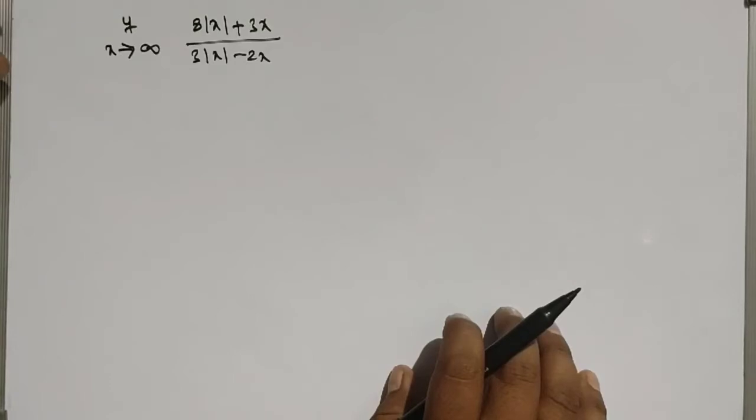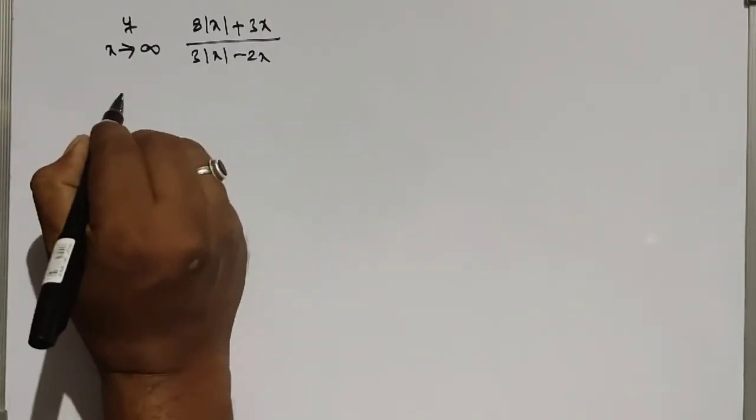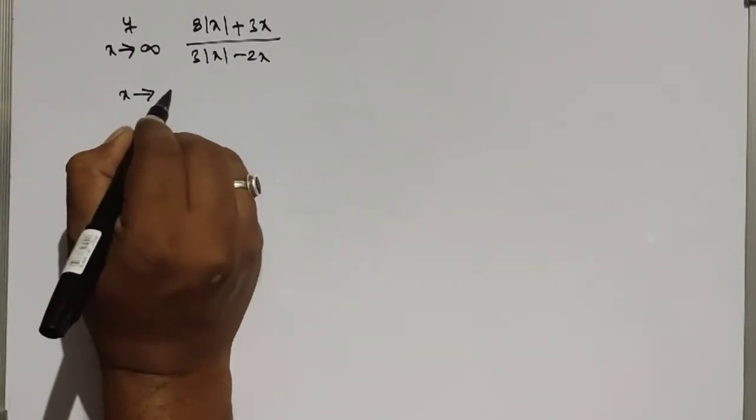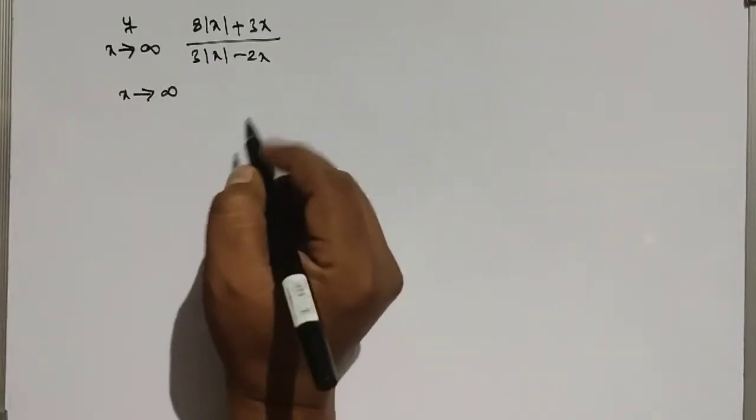Next important question in limits: limit x tending to infinity of (|x| + 3x)/(3|x| - 2x). If you observe here, x is tending to infinity, which means x is a positive value.